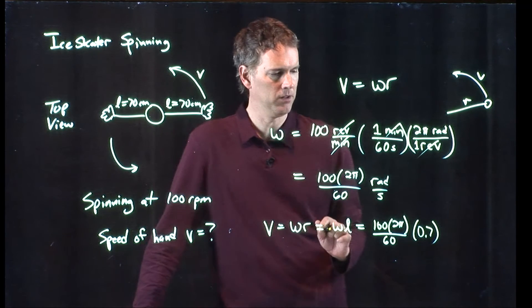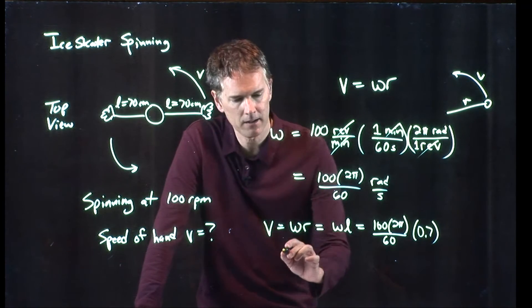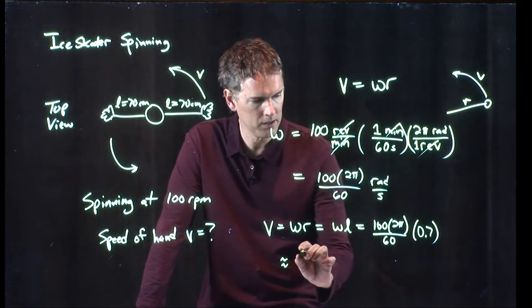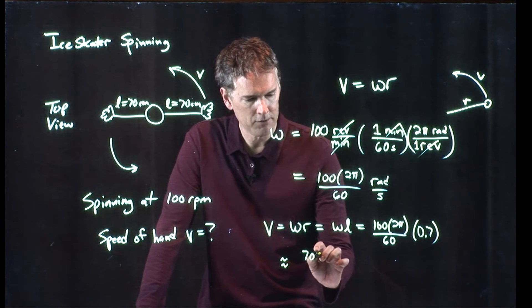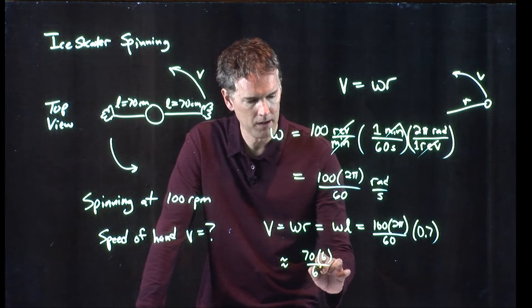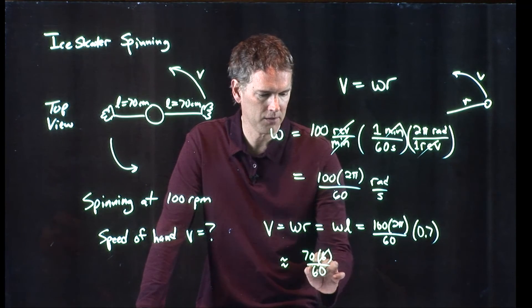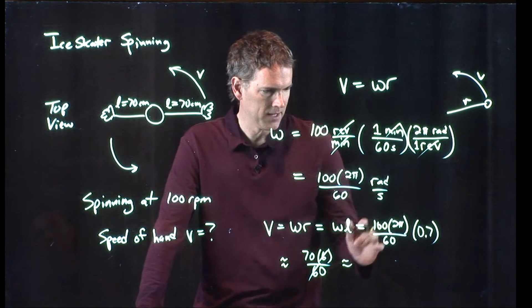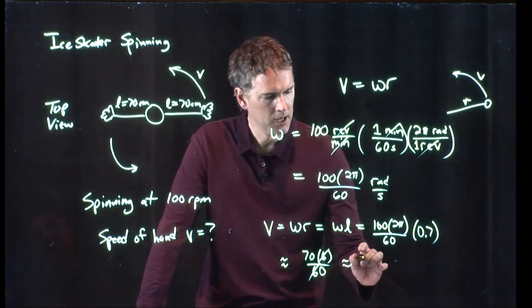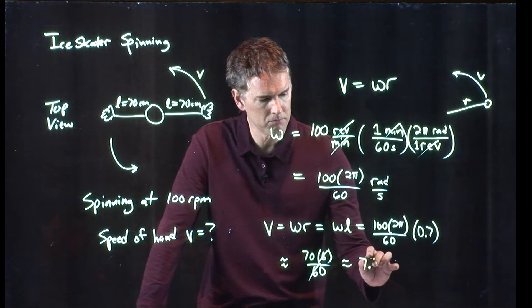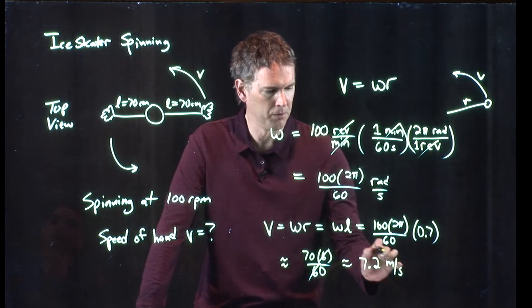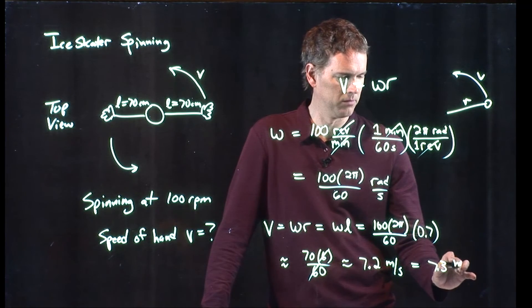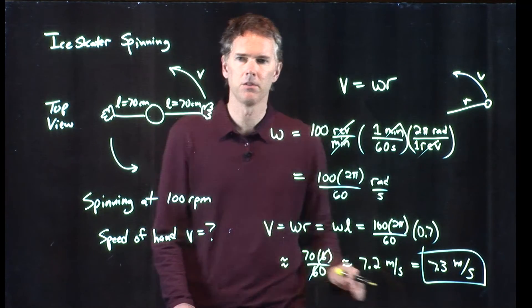Got to keep this in SI units. Let's see what we get. I'll approximate: 100 times 0.7 is 70, and 2 pi is about 6 — a little bit more, but that's alright. The 6s cancel out, giving us 70 over 10, which is about 7. Since 2 pi is actually a little bigger than 6, let's say this is maybe 7.2 meters per second. Anyone run it on your calculator? 7.3. Okay, so we were pretty close — 7.3 meters per second.